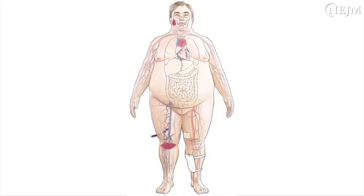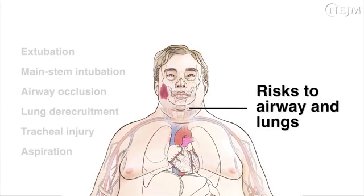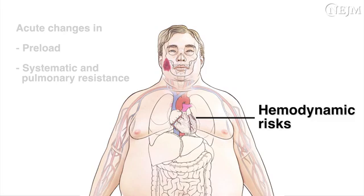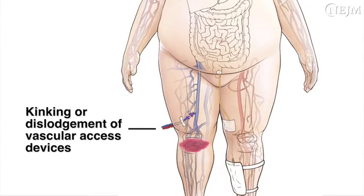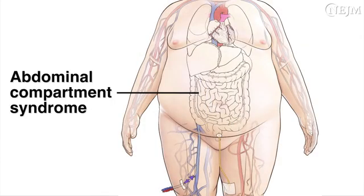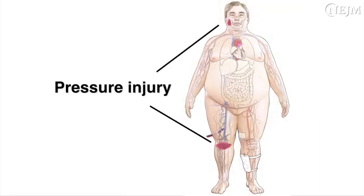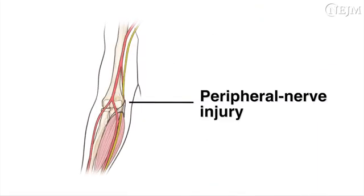There are risks associated with the prone position in intubated patients with an elevated BMI. Risks to the airway and lungs include extubation, main stem intubation, airway occlusion, lung derecruitment, tracheal injury, and aspiration. Hemodynamic risks include acute changes of preload, systemic and pulmonary resistance, and kinking or dislodgement of vascular access devices infusing vasoactive agents. Other risks include increased intra-abdominal pressure and abdominal compartment syndrome, kinking or dislodgement of tubing, pressure injuries including facial injuries, and peripheral nerve injuries.